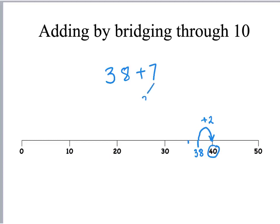That means two of the 7 has been added on so I need to partition the 7 into 2 and 5 and now I've got another 5 to add on and that's another easy calculation.